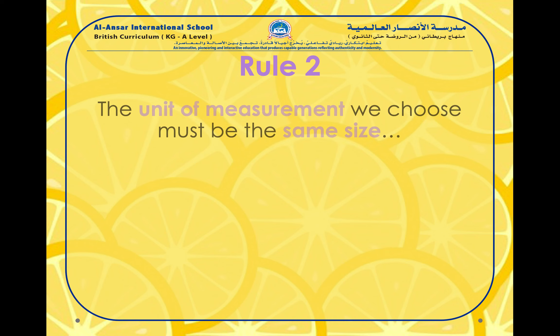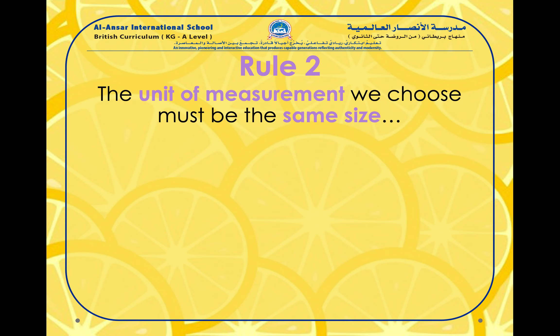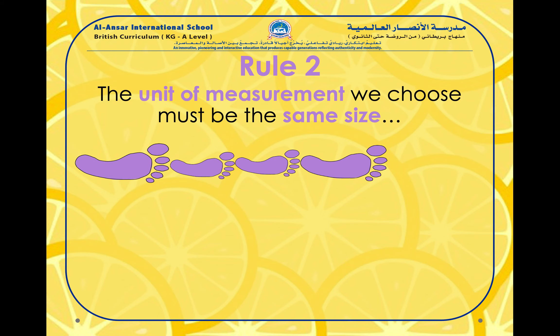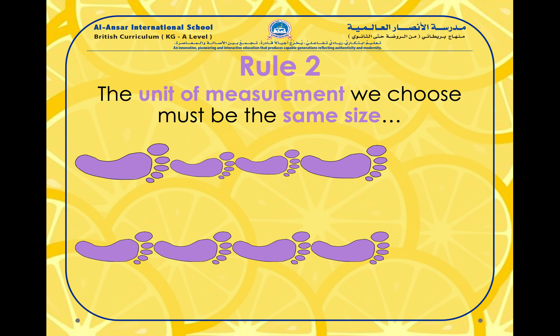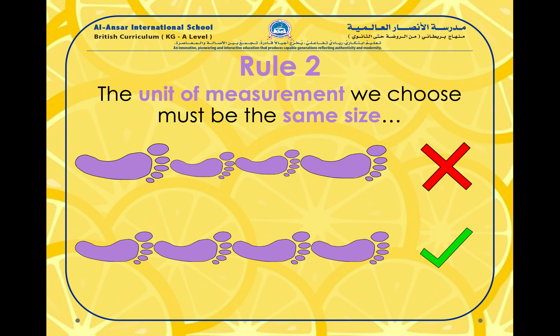Rule number two. The unit of measurement we choose must be the same size. So if we are using all feet, we cannot have one big foot and then one small foot. We need to use the same size foot all the time. The object must be the same and it must also have the same size.